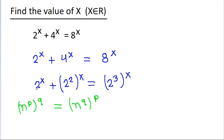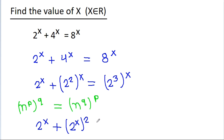Using this rule, 2 squared to the power x can be written as 2 to the power 2x, and 2 cubed to the power x becomes 2 to the power 3x. So we have 2 to the power x minus 2 to the power 2x equals 2 to the power 3x.